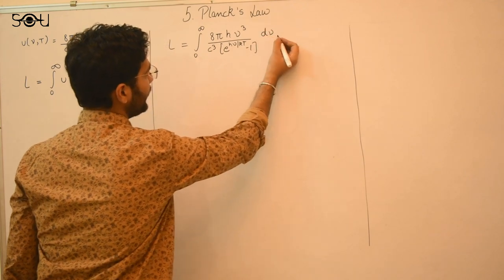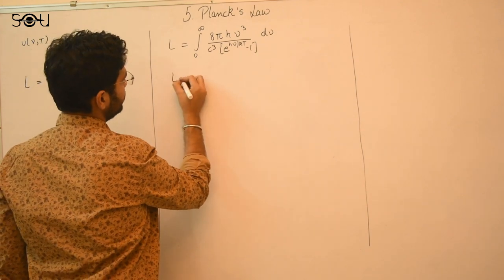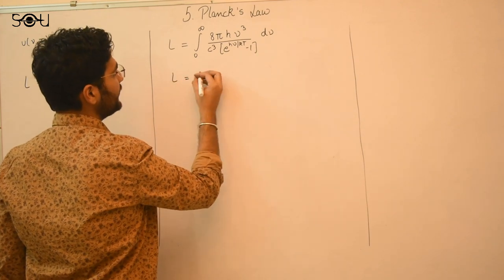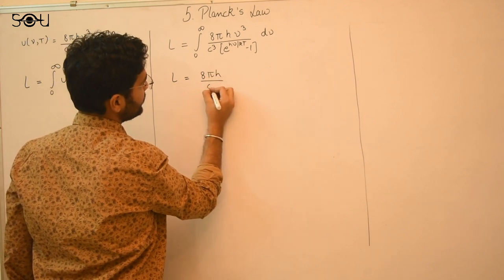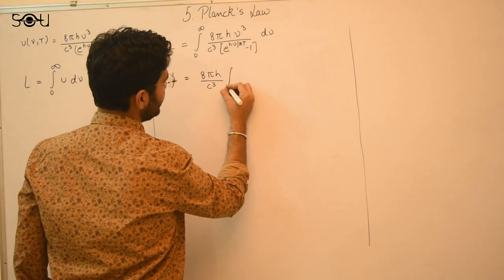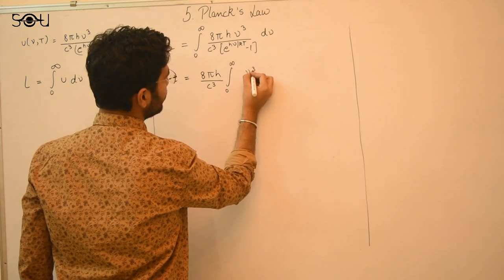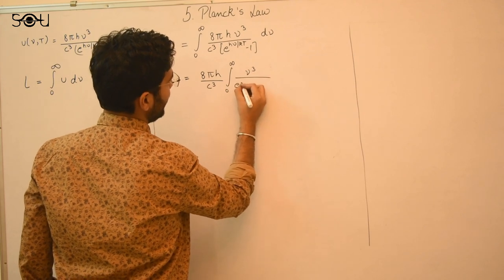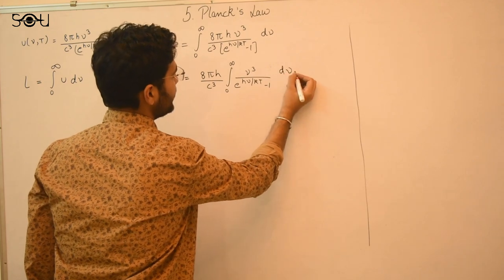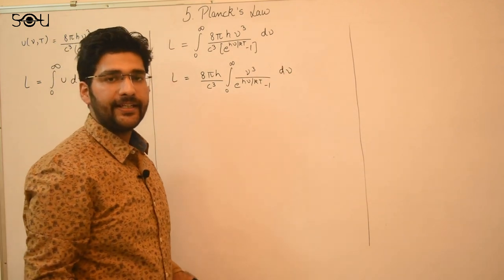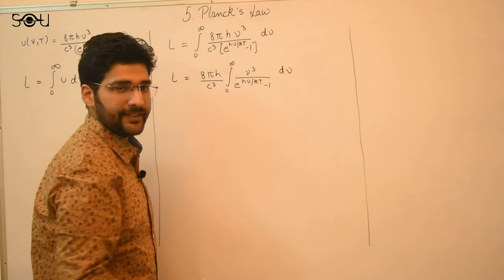Now we take the constants out of the integral. 8πh over c³ comes out of the integration, leaving the integral from 0 to infinity of ν³ over (e^(hν/kT) − 1) dν. Now, to compute this integral, we will make a substitution.